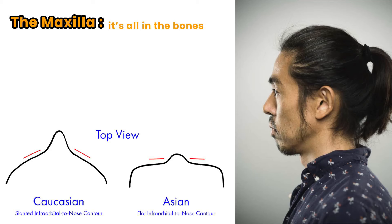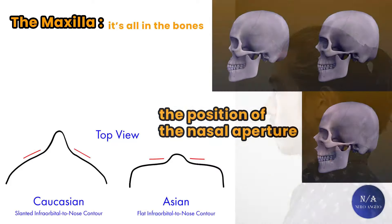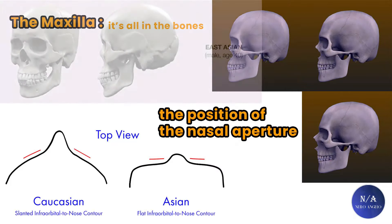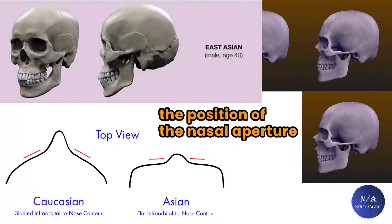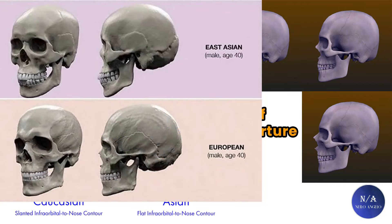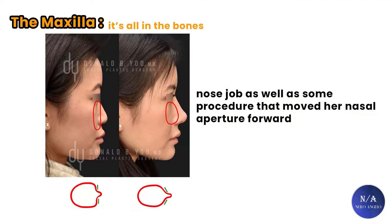Projected upper maxillas are typically seen in Caucasoids, whereas a flat upper maxilla is a Mongoloid trait. Another way to look at this is in terms of the position of the nasal aperture — the hole in the skull you breathe through. An aesthetic upper maxilla is, for the most part, a projected nasal aperture. Here's an East Asian woman who got a nose job as well as procedures that moved her nasal aperture forward and made the surrounding tissue more slanted forward toward the center. She used to have a clearly defined border between the front of her zygoma and the back of her nose, and after surgery it turned into a smooth blended transition, which is ideal.